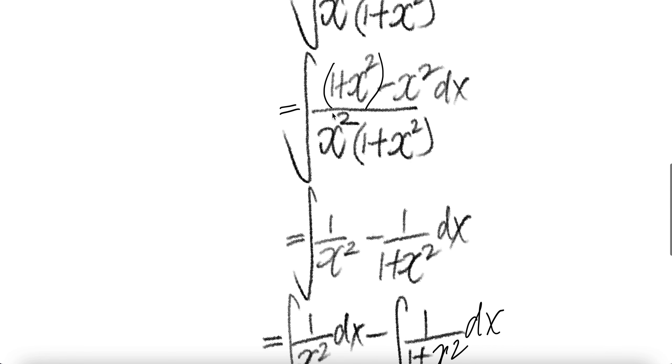There are two terms, so one term here, second term. First term: this and that cancel, you get 1 over x squared. Second term is this. X squared cancels, you get 1 over 1 plus x squared.